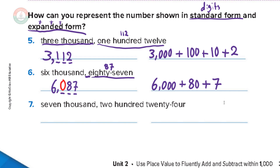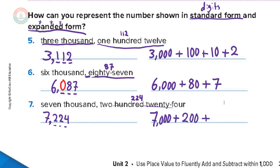Last question: seven thousand two hundred twenty-four. Write seven, then a comma — you have three digits to write, and 224 is already three digits, so we write two, two, four. No zeros needed. So the number is 7224. In expanded form: seven thousand (7000) plus two hundreds (200) plus two tens (20) plus four ones (4). Seven thousand plus two hundred plus twenty plus four — seven thousand two hundred twenty-four.